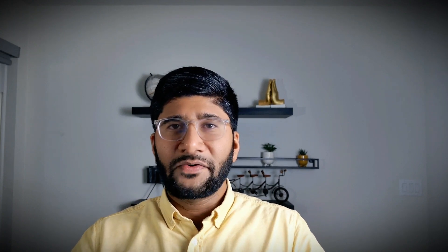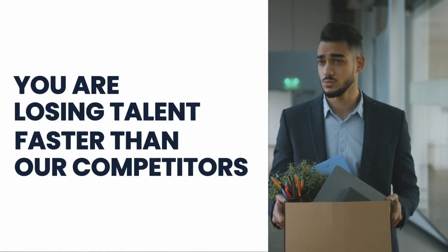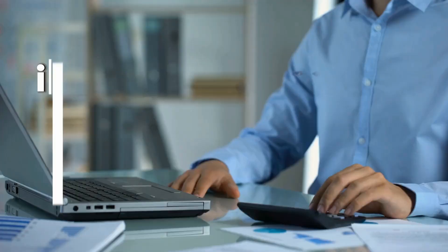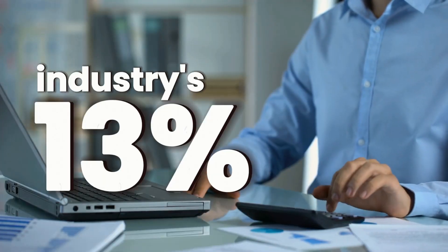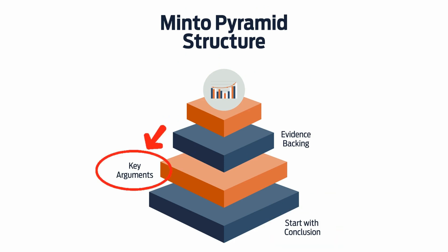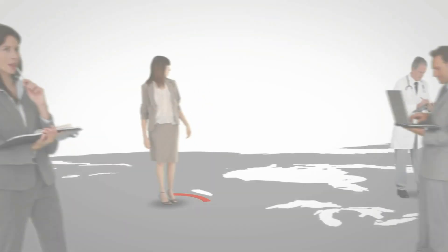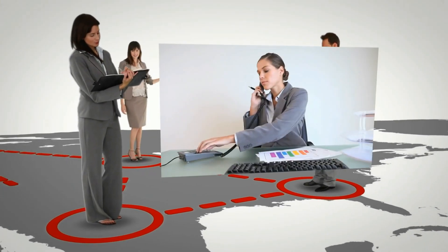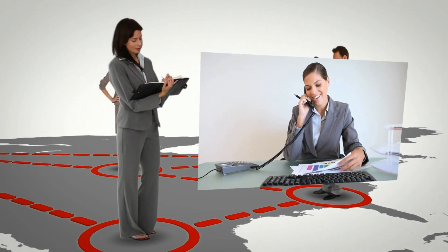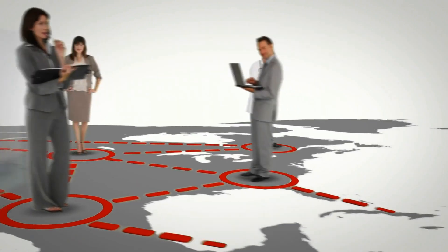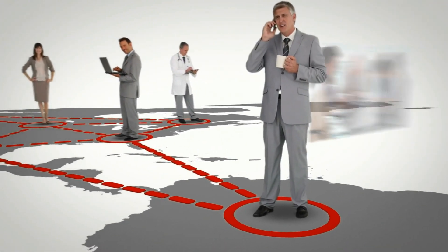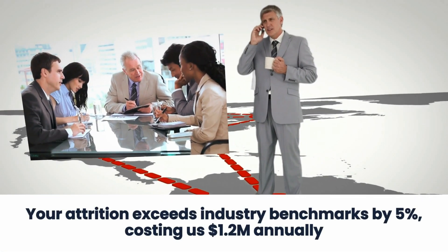Here's an example: you're losing talent faster than your competitors — you have an 18 percent attrition rate, higher than the industry average of 13 percent. Using the Minto Pyramid, you start with a conclusion: you need to improve compensation and training, and prevent burnout to reduce attrition. This becomes your north star. Then you support with clear arguments: your attrition exceeds the industry benchmark by five percent, costing 1.2 million dollars annually.